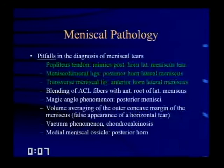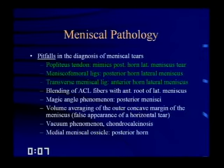Other pitfalls involve normal anatomy that can mimic tears of the lateral meniscus, specifically the popliteus tendon, meniscofemoral ligaments, and transverse meniscal ligament. Additional pitfalls include blending of ACL fibers with the anterior root of the lateral meniscus, magic angle phenomenon, volume averaging, and chondrocalcinosis.